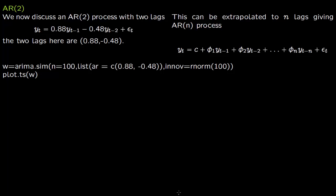We now discuss an AR(2) process. An AR(2) process has two lags. You have y_t = 0.88*y_{t-1} - 0.48*y_{t-2} + ε_t. 0.88 is the first coefficient and the second coefficient is minus 0.48.